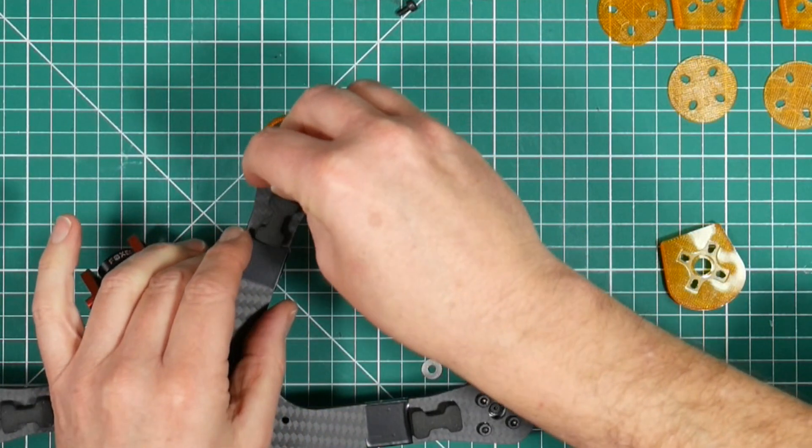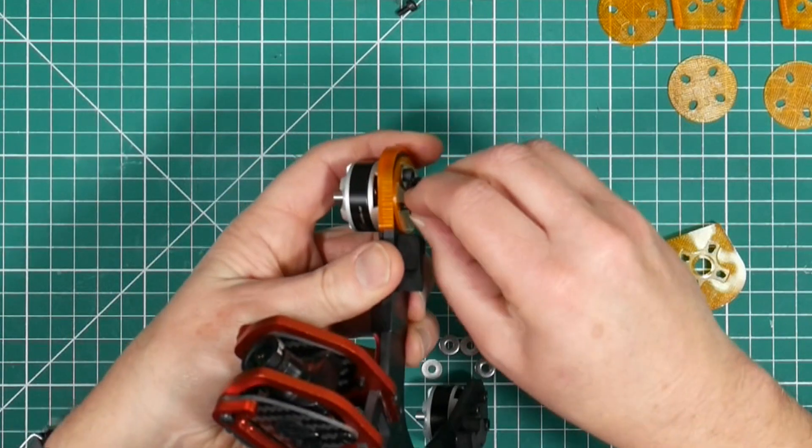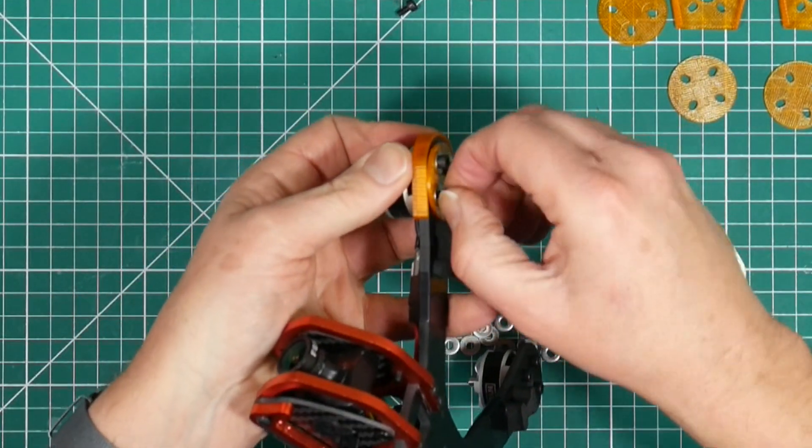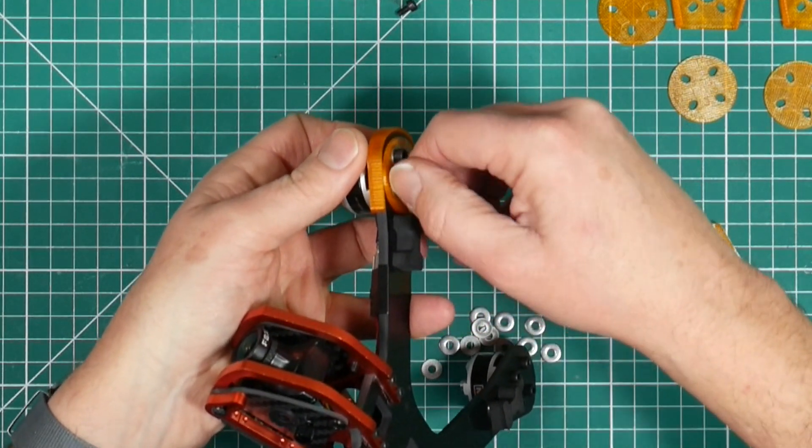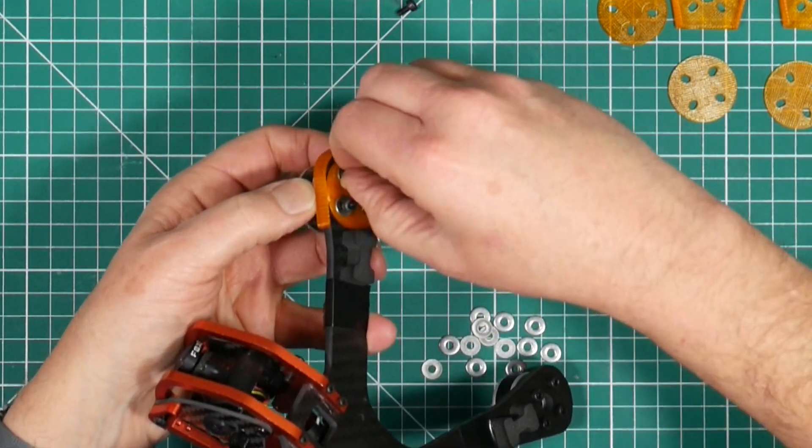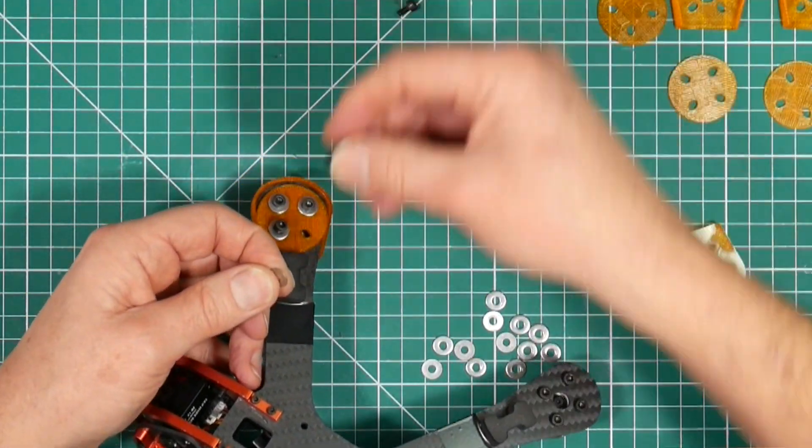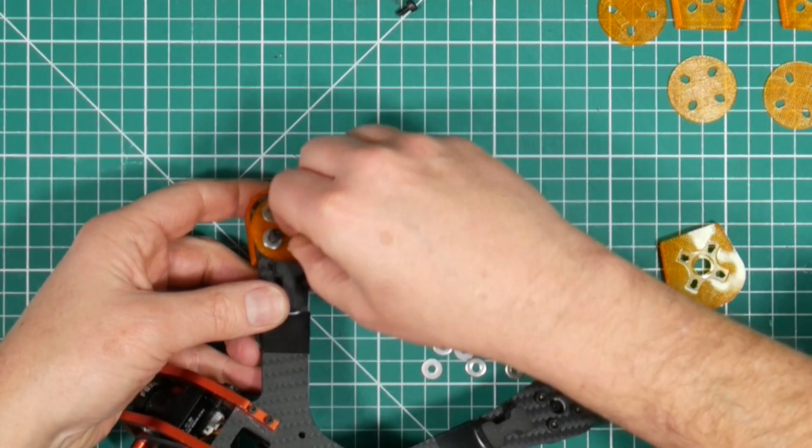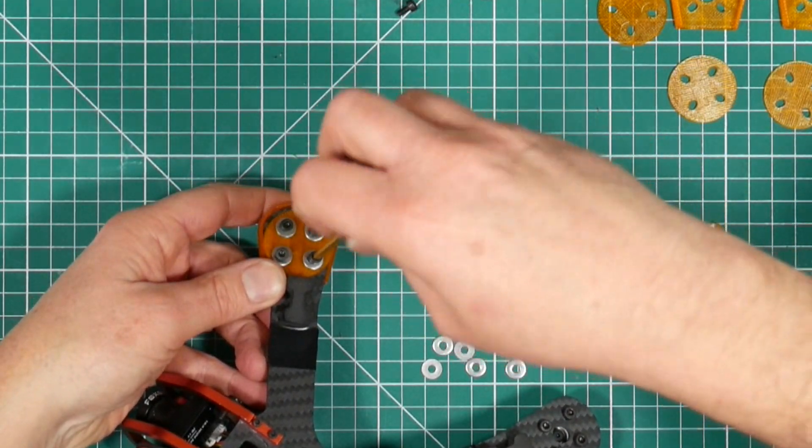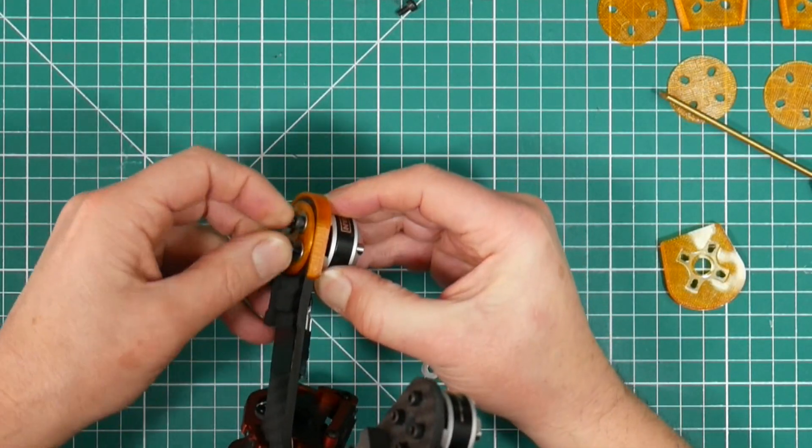On the original versions of these that came out for the Diatone GT2, I used thread lock to fix the bolts in. I'm not particularly a fan of thread lock, but I was just a little bit concerned that the bolts may come loose. I've tried with and without thread lock, and to be honest you don't really need it, but it's entirely up to you if you feel more comfortable putting thread lock on these bolts. I just think it leaves a bit of a mess.